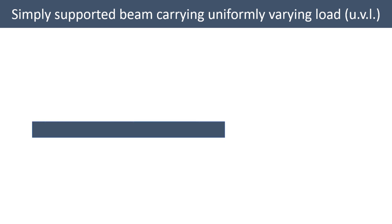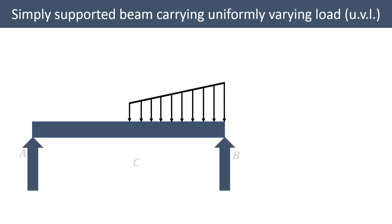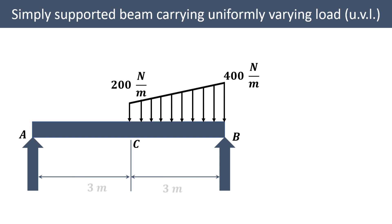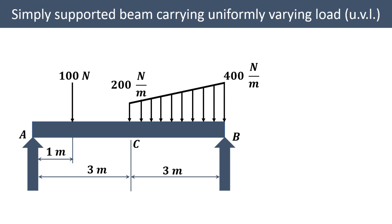This is the typical example we are looking at. We have a simply supported beam of total span length of 6 meters, carrying a point load of 100 Newton at a distance of one meter from the left hand support, and a uniformly varying load of 200 Newton per meter up to 400 Newton per meter between C and B.